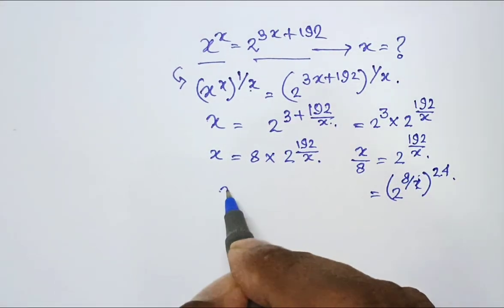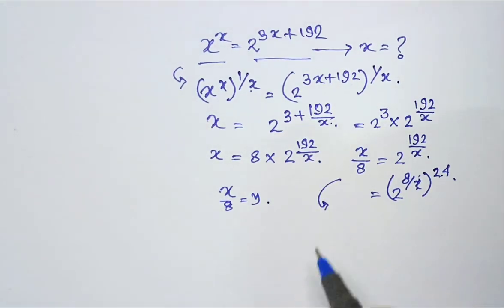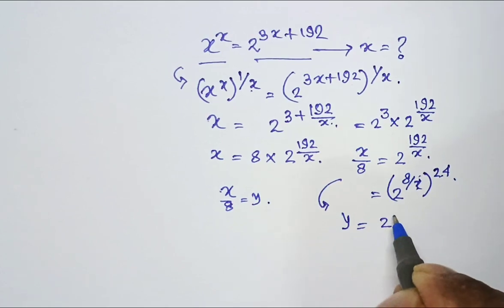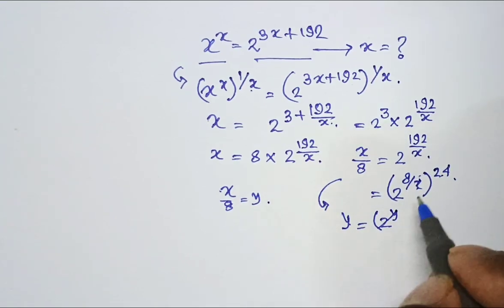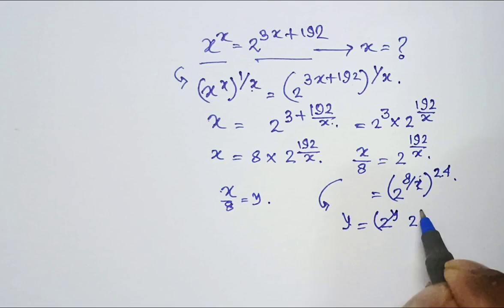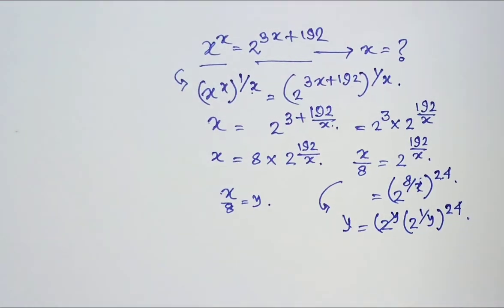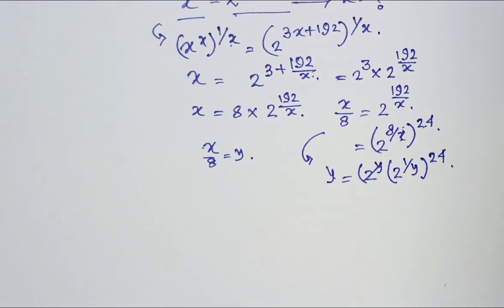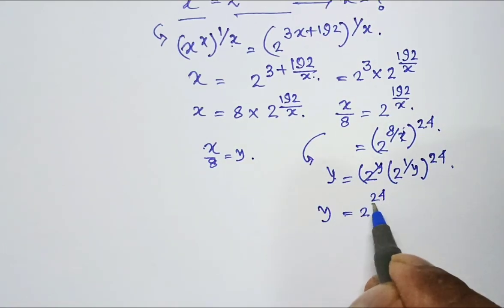Now I am assuming x by 8 as a different variable y. So this problem becomes if x by 8 is y then 8 by x is 1 by y. 2 to the power 1 by y whole to the power 24. Then y equal to 2 to the power 24 by y.